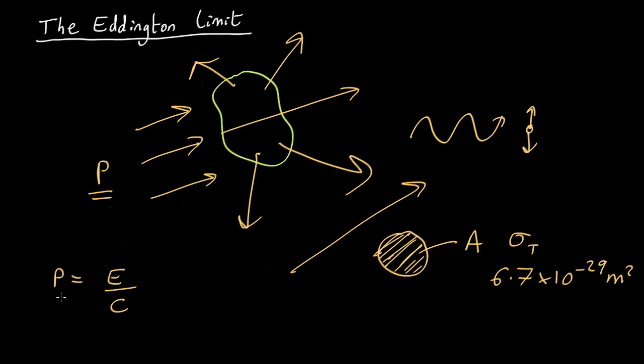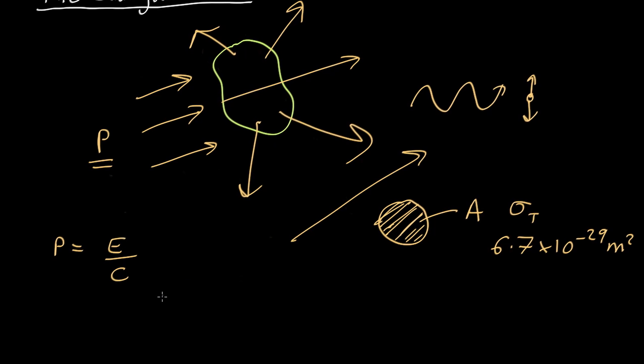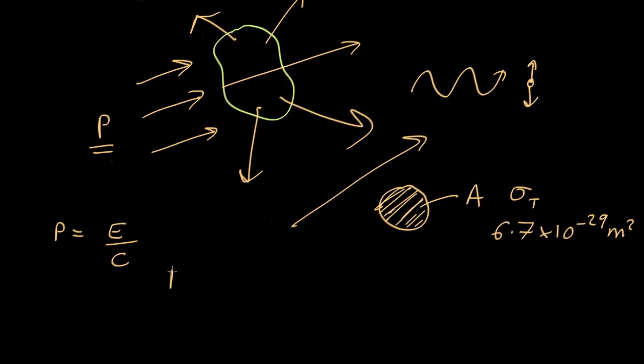Now we want the amount of momentum hitting per second. So that is going to be equal to the amount of energy hitting per second divided by the speed of light. Energy per second per unit area is called flux, and we know how to calculate that. So the flux of energy, that is the amount of energy per unit area per unit time, is equal to the luminosity of the white dwarf or whatever divided by 4 pi d squared.